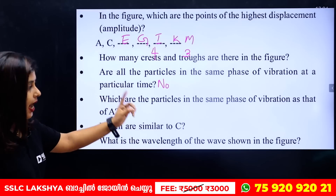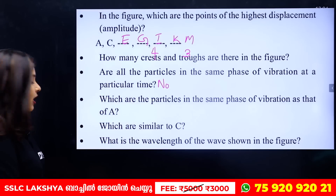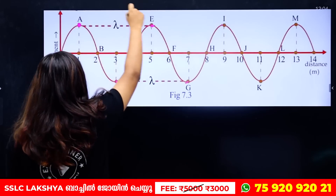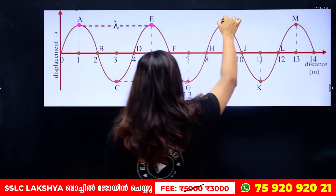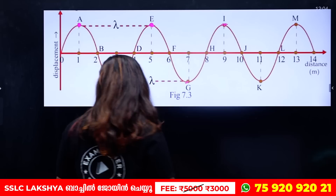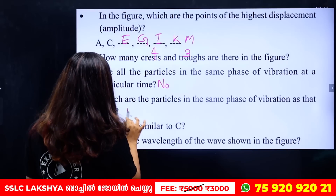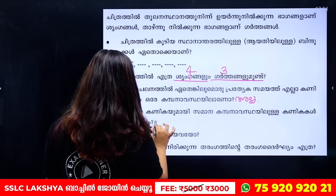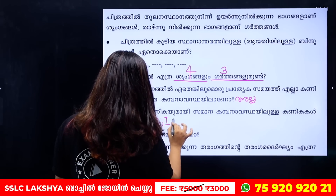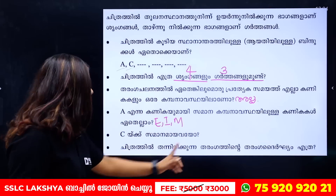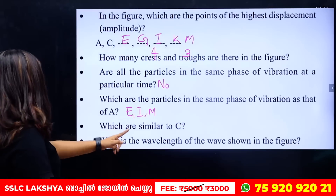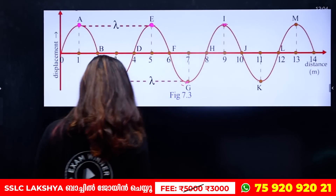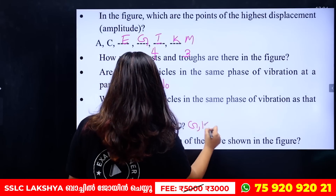Which are the particles in the same phase of vibration as particle A? Particles that are at the same position at the same time: E, I, M. And which is similar to C? C and K.